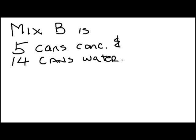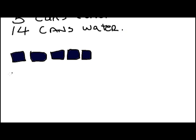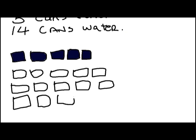B is five cans of concentrate and 14 cans of water. There's the cans of concentrate. I made them dark, really dark blue. Looks like black. And there's the water, which is going to be light gray.